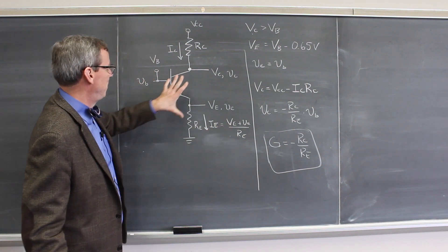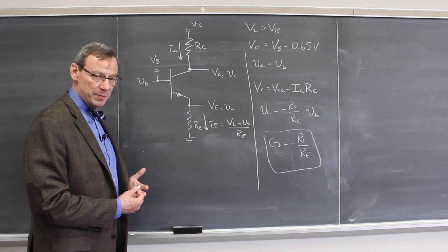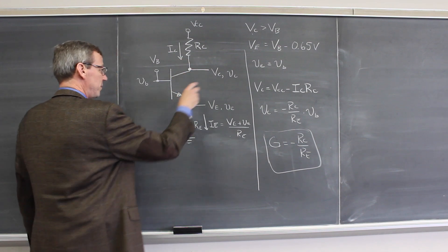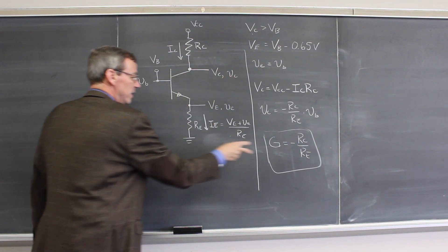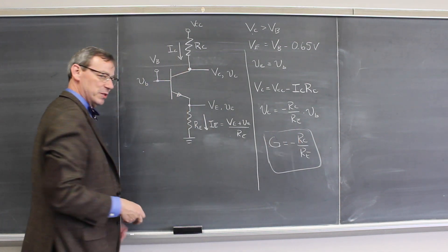So that is the basic picture here of the common emitter amplifier. It's a circuit, extra resistor. We take the output on the collector. And the output AC signal is an amplified and inverted copy of the input signal.